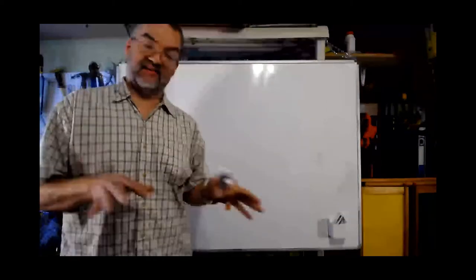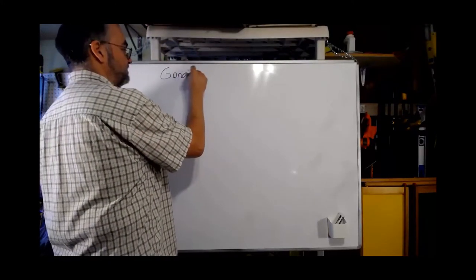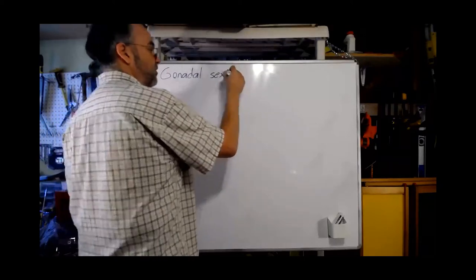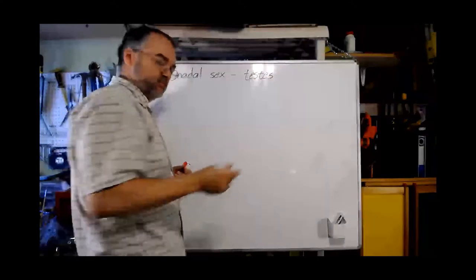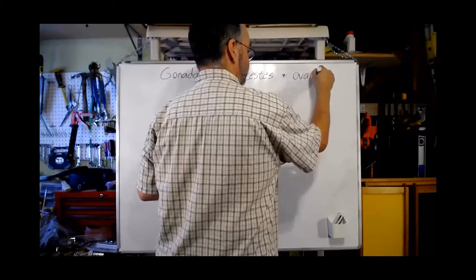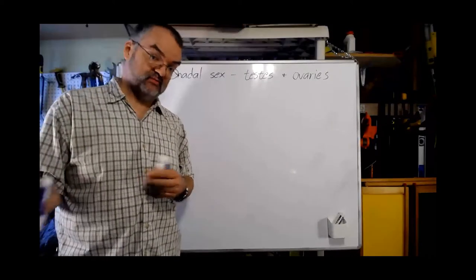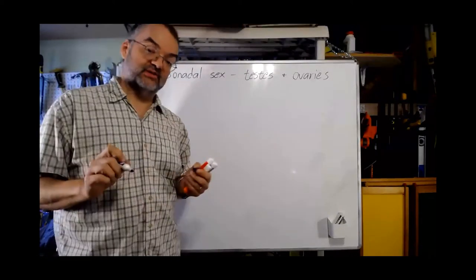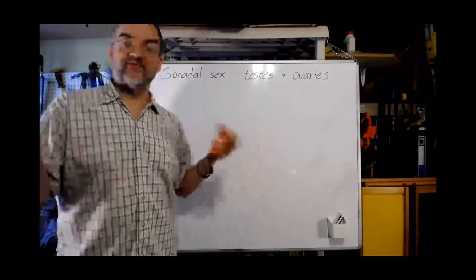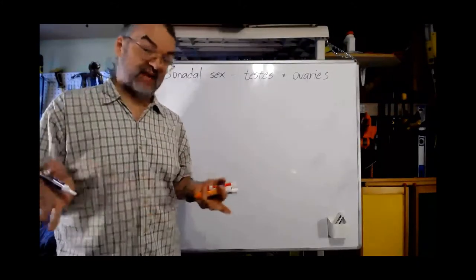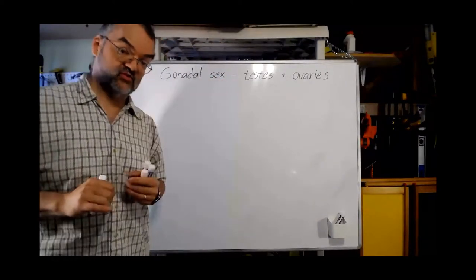Let's talk about gonadal and anatomical sexual differentiation. When I talk about gonadal sex, I mean what kind of gonads do we have? The most usual variations are testes, mostly associated with male, and ovaries, mostly associated with female. These gonads produce our gametes — sperm or eggs. They also produce important hormones that guide sexual differentiation during development of the embryo and other sexual characteristics and even behavior during the rest of the organism's life. So these are both sources of gametes and important sources of hormones — they're important glands.